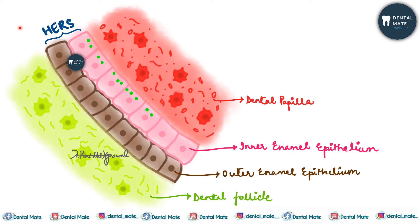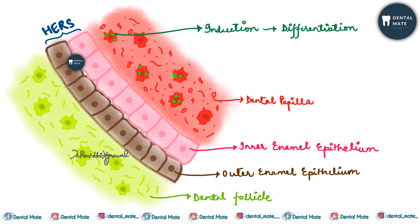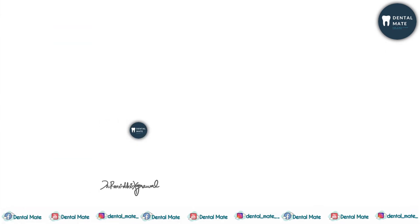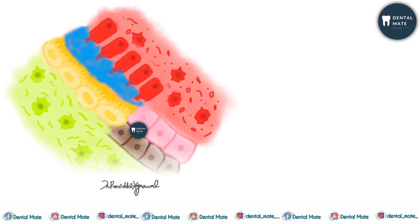The inner enamel epithelium of HERS secretes inductive factors. Under the organizing influence of the inner enamel epithelium, the dental papilla cells undergo induction and differentiation, differentiating into odontoblasts that lay down the dentine.